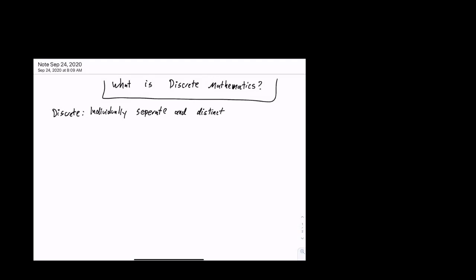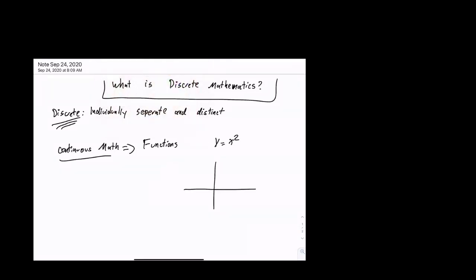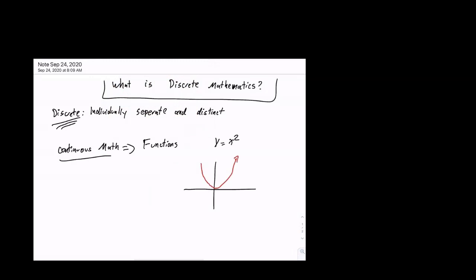So when we talk about discrete math, it's very different. In continuous math, continuous math is like when we talk about functions. So if I said something like y equals x squared, right, you would graph this like this. A little bit better on the bottom.